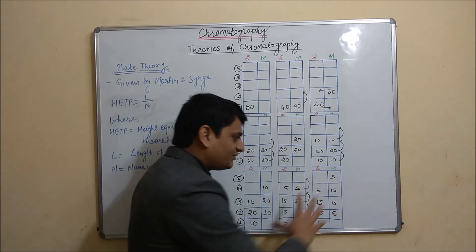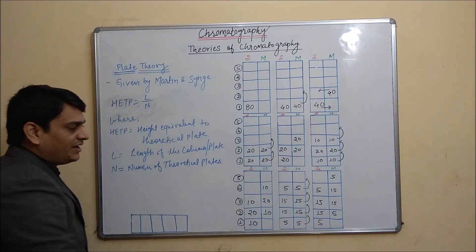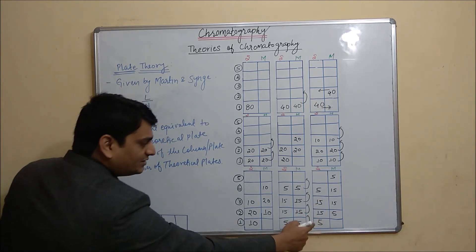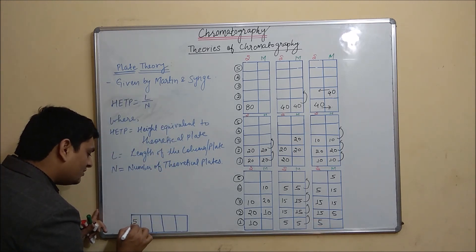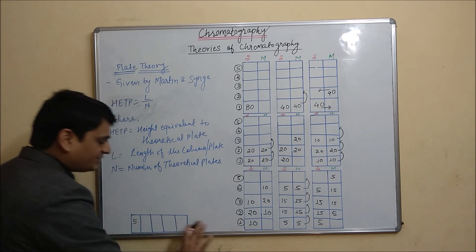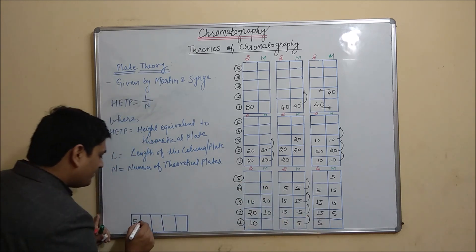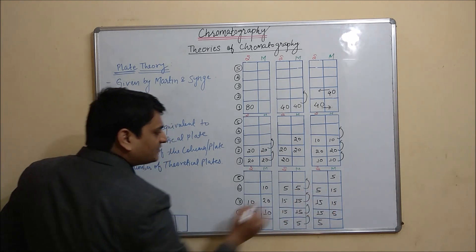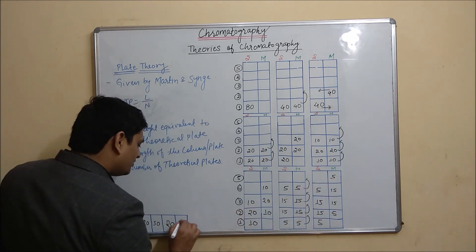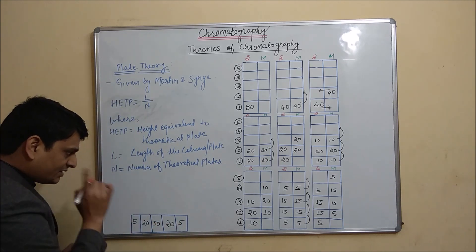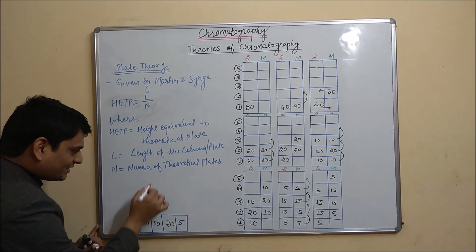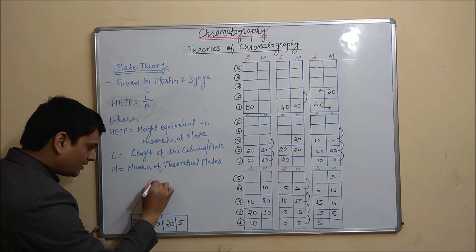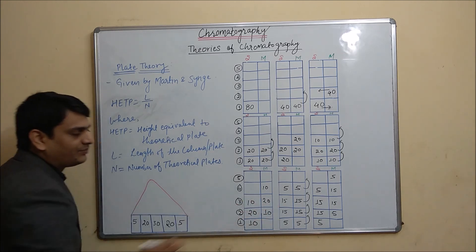Upon elution, it will give a peak for the compound. Combining both stationary phase and mobile phase amounts at each position gives: 5 mg, then 15 plus 5 equals 20 mg, then 15 plus 15 equals 30 mg, then 5 plus 15 equals 20 mg, then 5 mg. So the peak comes out as 5, 20, 30, 20, 5 — with the highest point at 30 mg in the middle, producing a bell-shaped peak for this separation.